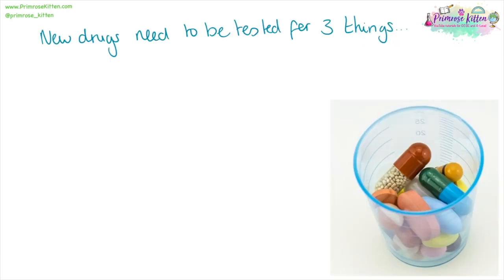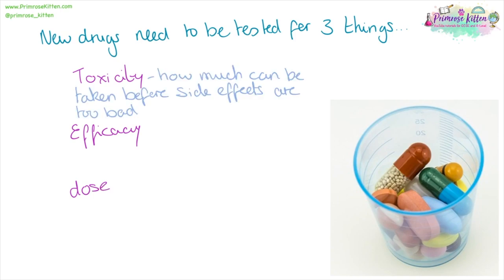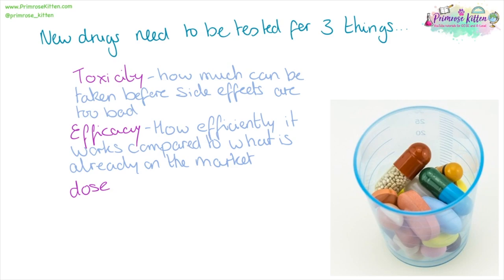New drugs need to be tested for toxicity, efficacy, and dose. Toxicity tells us the level of drug we can take before the side effects are too bad — all drugs have side effects, but knowing how toxic they are tells us a safe level to take them at. Efficacy is how efficient the drug is — does it work better or worse than what's already on the market, and are the side effects better or worse? Is it worth developing? And dose tells us how much you need to take for the drug to be effective.